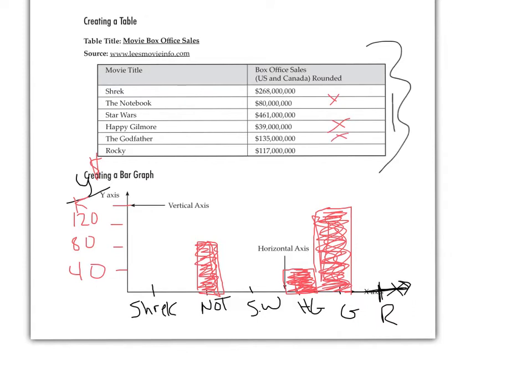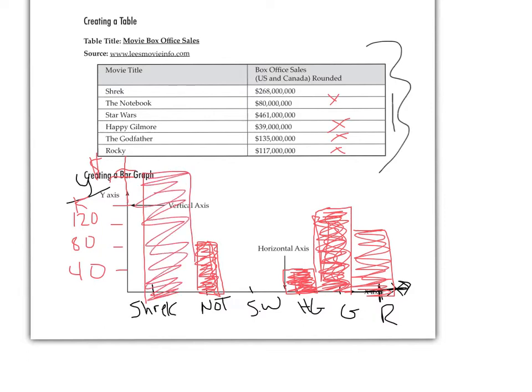So that took care of the Godfather. We have Rocky being 117,000, which is going to be like right about here. What are we missing? Star Wars and Shrek, which are very high. So we could make a break and put Star Wars and Shrek way up here. Shrek was 268,000, way up here. And Star Wars 461,000, which is going to be way up here. So that's the basics of what a bar graph is.